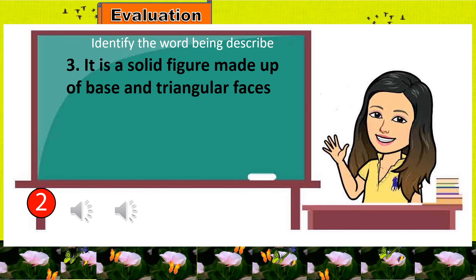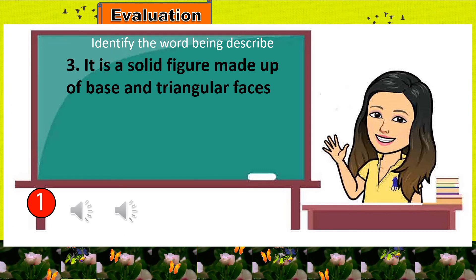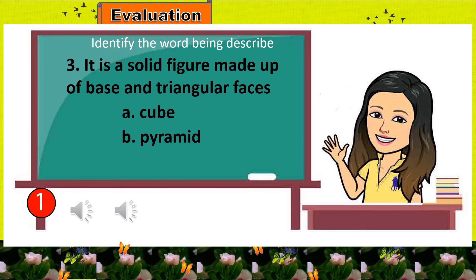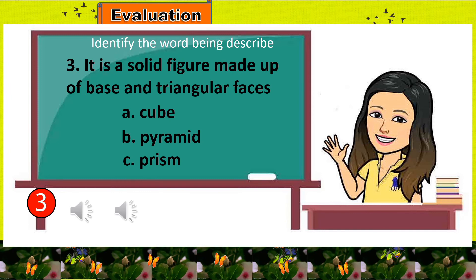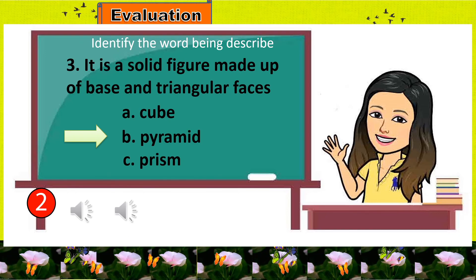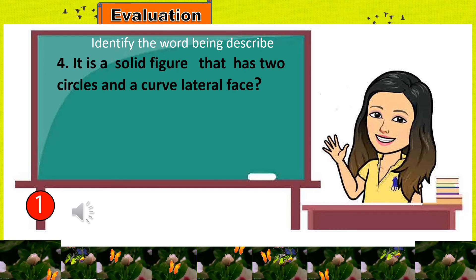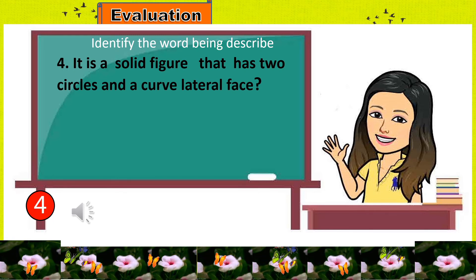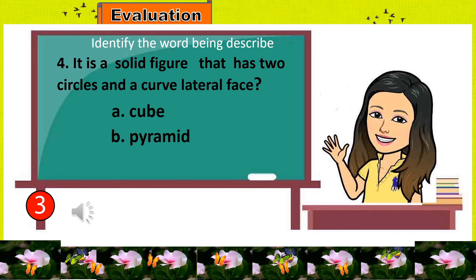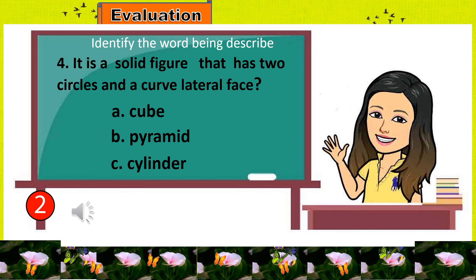Number 3: It is a solid figure made up of a base and triangular faces. A. Cube, B. Pyramid, C. Prism. Very good — the answer is letter B, Pyramid. Number 4: It is a solid figure that has 2 circles and a curved lateral face. A. Cube, B. Pyramid, C. Cylinder. Great — it is cylinder.